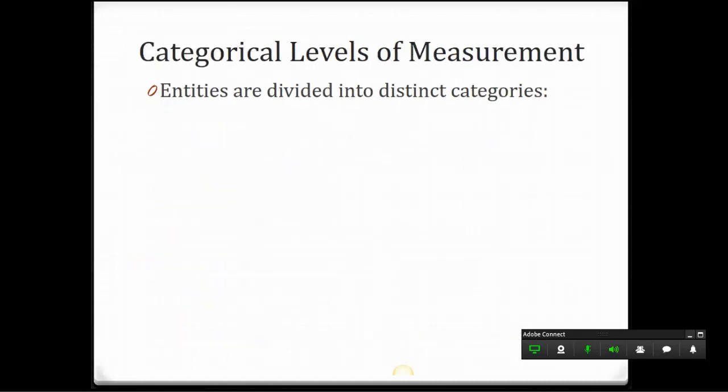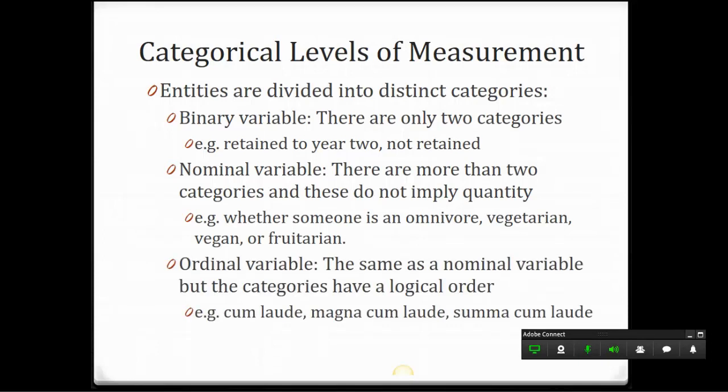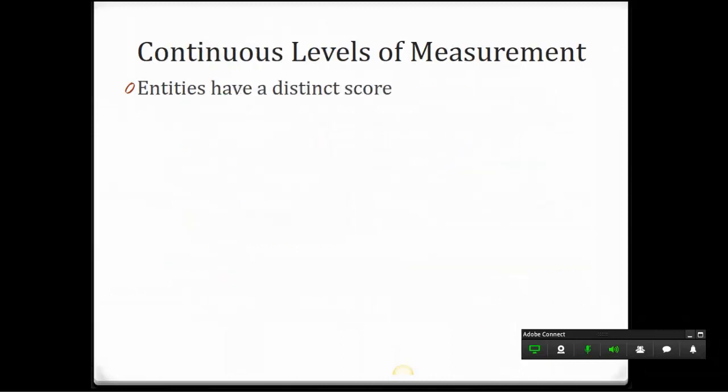We've also got different levels of measurement. So there's binary variables, which are two categories, nominal, which are more than two categories, and they don't necessarily imply any type of logical order. So if I have a category for omnivore, vegetarian, vegan, those are not ranked in any particular order. Ordinal variables, however, are usually ranked in a logical order, such as cum laude, magna cum laude, and so on. We're primarily going to use binary and nominal variables in this class.